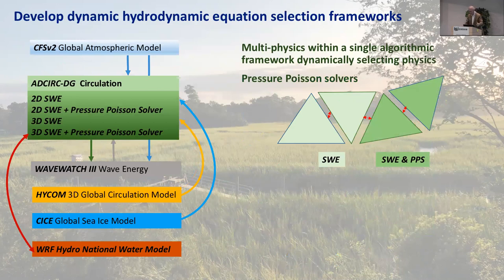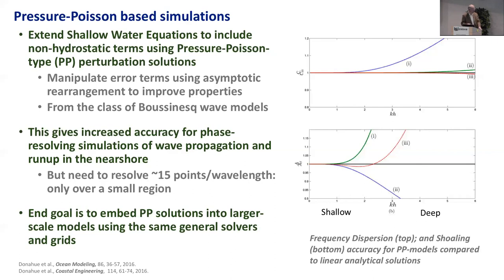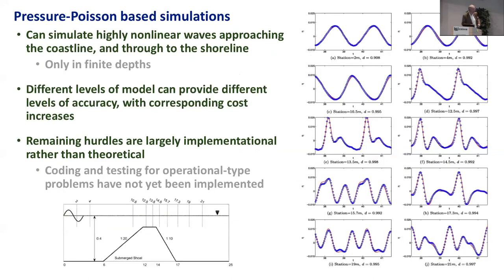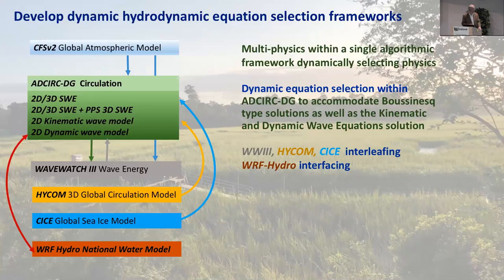For example, when things are calm, you might not want to solve the Boussinesq equations anywhere. When the waves get really big and you have infragravity waves being generated, you might want to turn on the pressure Poisson solver. Andrew Kennedy and some students have been playing with this for a long time. There's a whole hierarchy of orders of models and precision that you can generate — as a little example, doing a wave running over this berm, you can match the data really well. It becomes this dynamic type of framework.